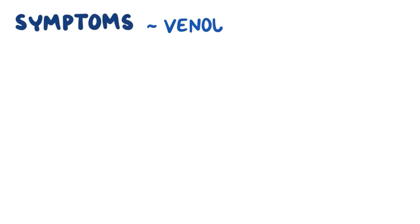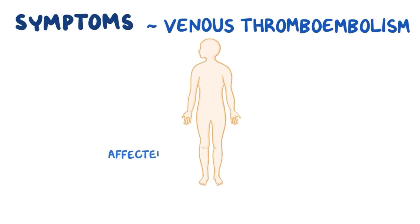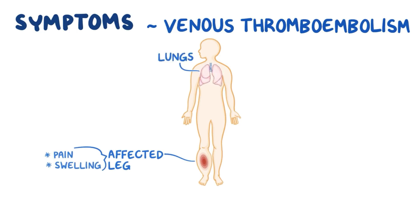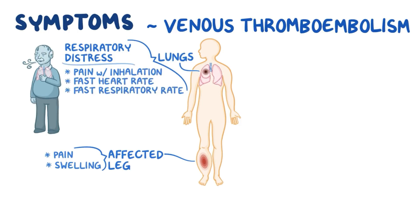Symptoms of venous thromboembolism occur in the affected leg and include pain and swelling. If parts of the clot break off and travel to the lungs, there can be signs of respiratory distress like pain with inhalation, fast heart rate, and a fast respiratory rate.